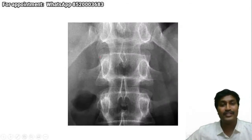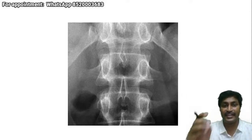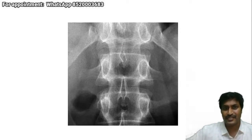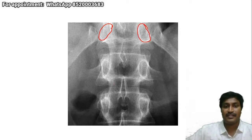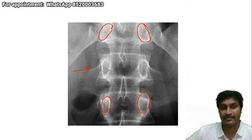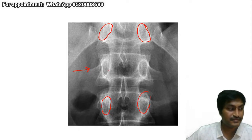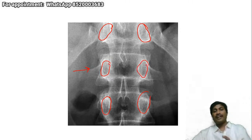In the same picture, as I have told you, in the AP view all three layers are superimposed on each other, so I have to selectively identify each and every layer. In the first step I identified the posterior elements — that is the butterfly. In the second step I will identify the pedicle, which is very easy. Are you able to identify the pedicles? These are the pedicles. So the pedicles form the middle column.